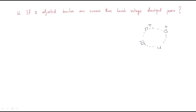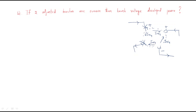The brush arrangement is: one positive, one negative, one positive, one negative. Positive brushes take the supply and negative brushes give the supply. If two adjacent brushes are removed — say this brush and this brush are removed — then the total current distribution changes. Some current Ia/4 flows at each remaining path, but there is no path for current at the removed brush locations.